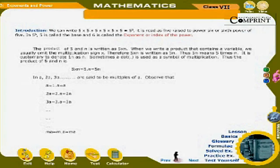The product of 5 and n is written as 5 × n. When we write the product that contains a variable, we usually omit the multiplication sign ×. Therefore, 5 × n is written as 5n. Thus, 5n means 5 times n. It is customary to denote 1 × n as n.